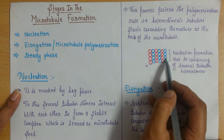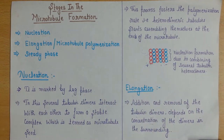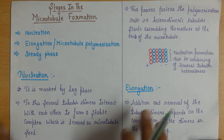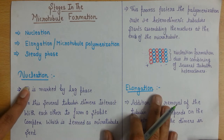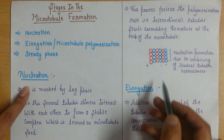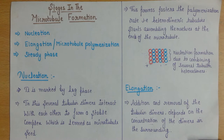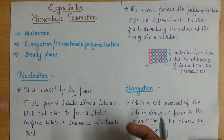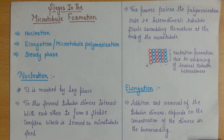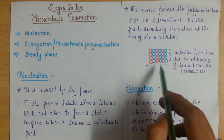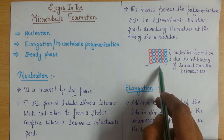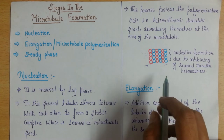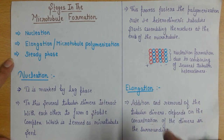This complex which is formed — we call it the microtubule seed. Some heterodimeric subunits come together to form this complex. Just as a seed helps a plant to grow, providing the initiation for plant growth, similarly the nucleus here is also working like a seed — that is why we call it the microtubule seed.